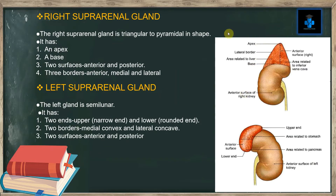The right suprarenal gland is triangular or pyramidal in shape. It has an apex, a base, two surfaces — anterior and posterior — and three borders: anterior border, medial border, and lateral border.